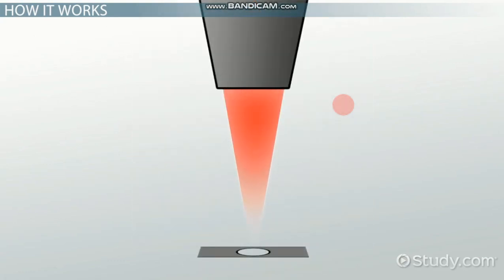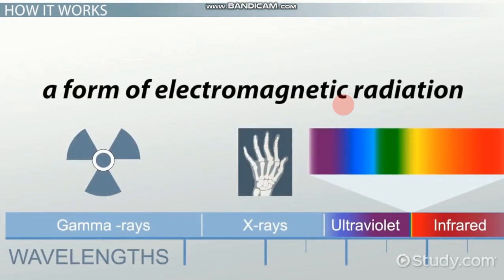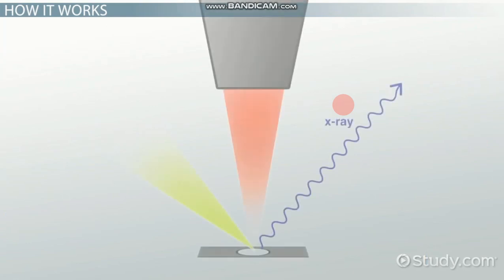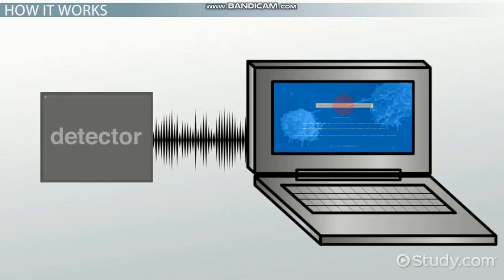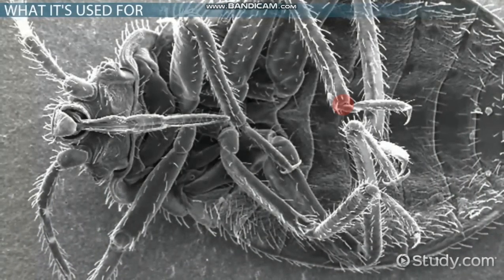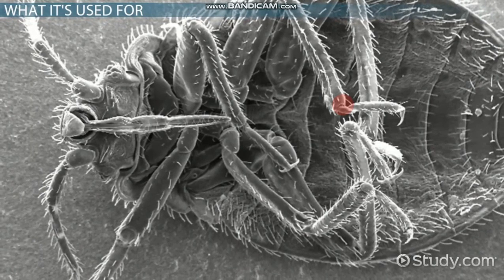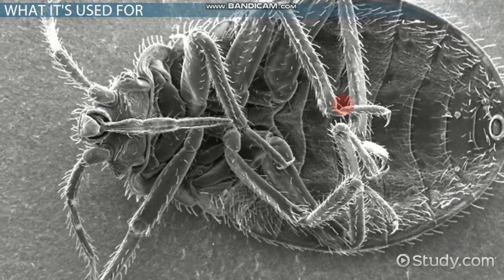After the beam hits the sample, the sample discharges electrons and a form of electromagnetic radiation known as X-rays. These X-rays and electrons are detected by structures called, unsurprisingly, detectors. The detectors convert all of this into a signal, which is sent to a screen where an image is produced. It's important to note that a scanning electron microscope is used to image and thus study the surface of a sample.